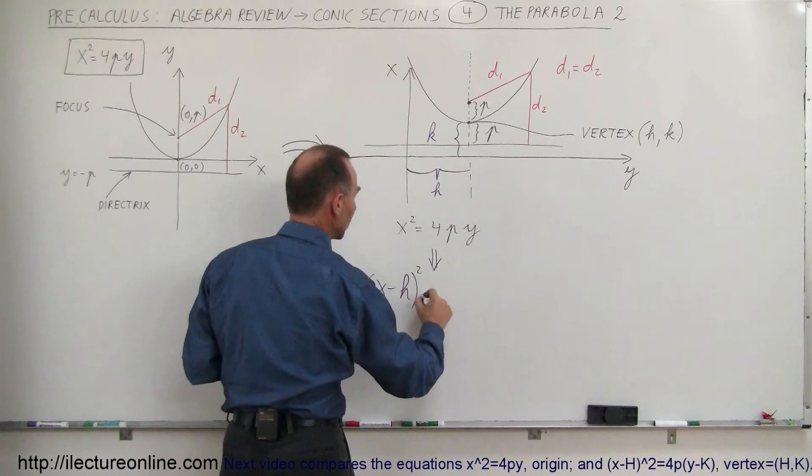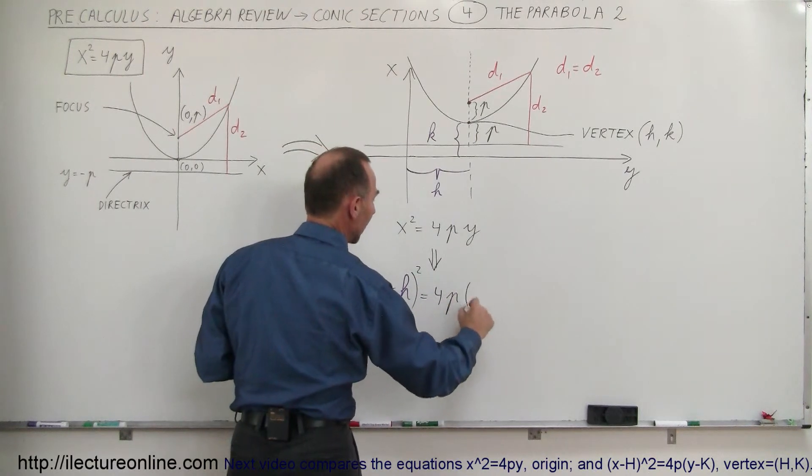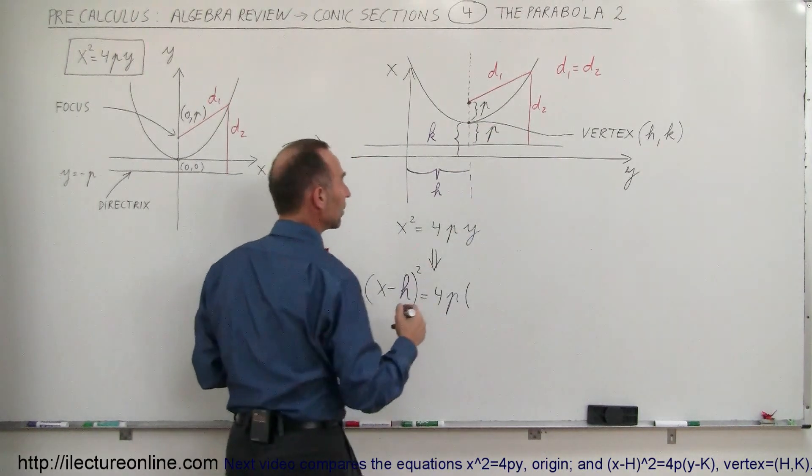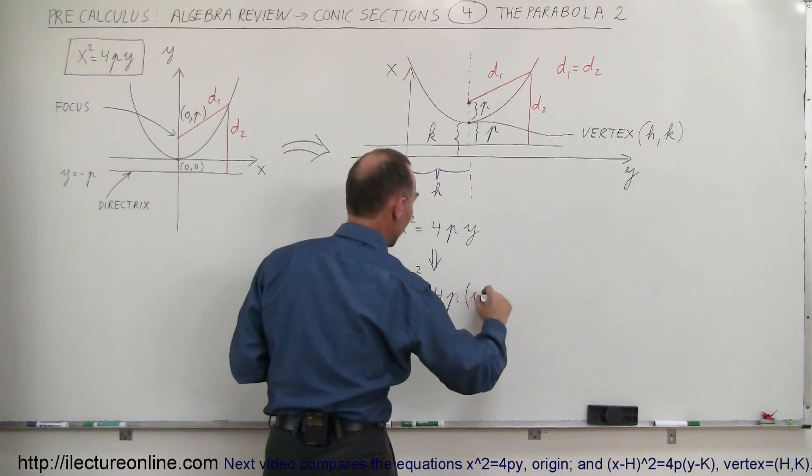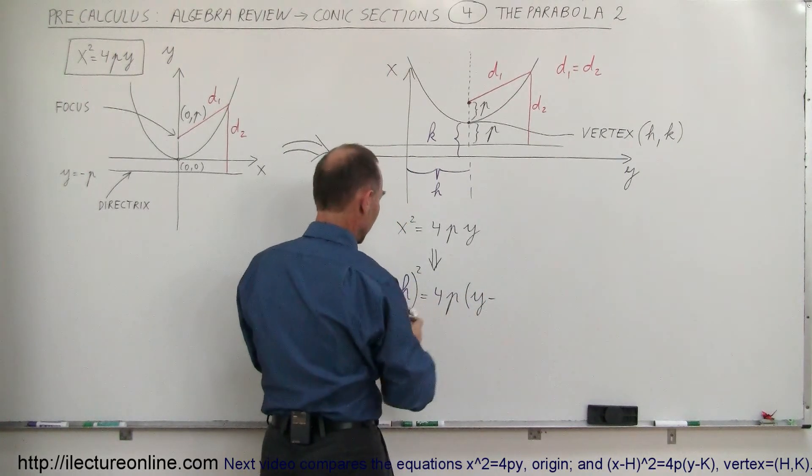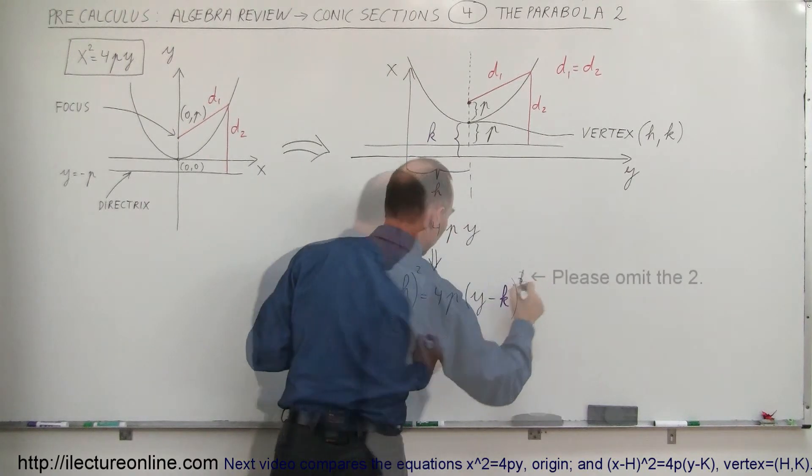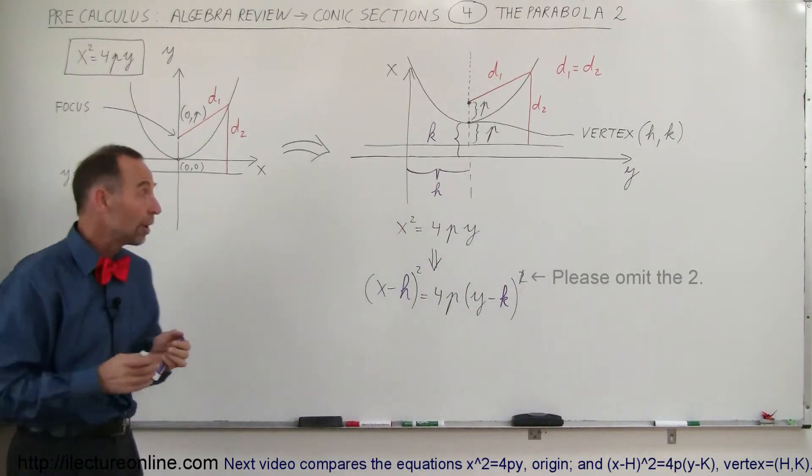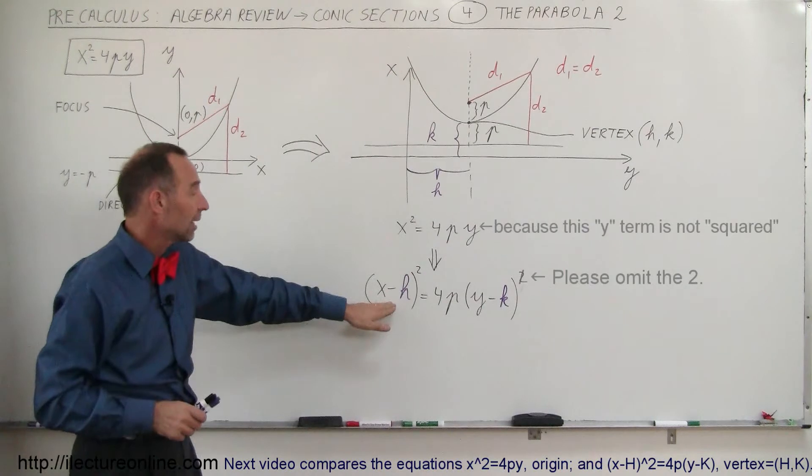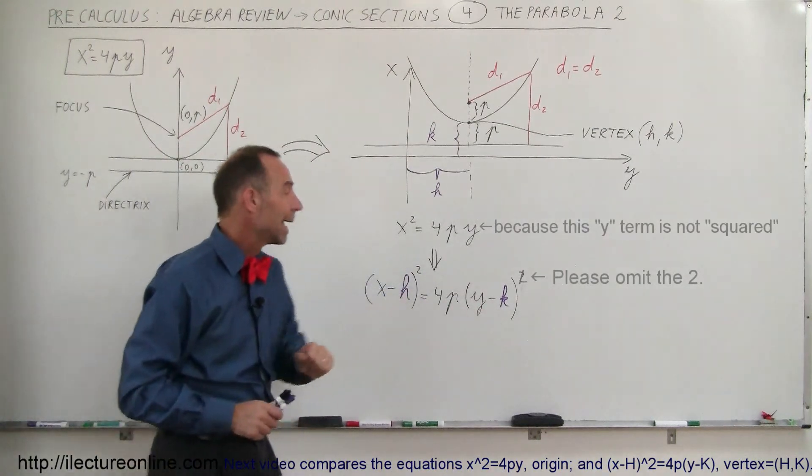And so that's how we adopt the equation equals 4p. And since we moved up a value of k, we write y minus the constant k. So that's how we change the equation. The only thing we did was subtract h from x and k from y.